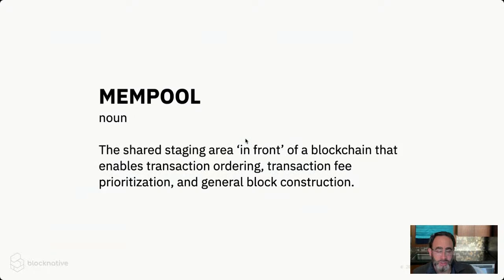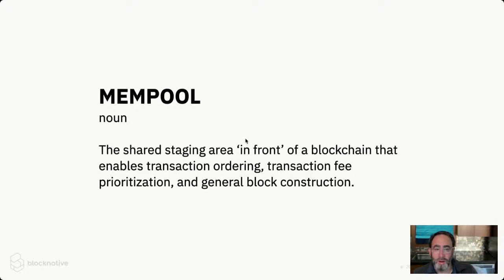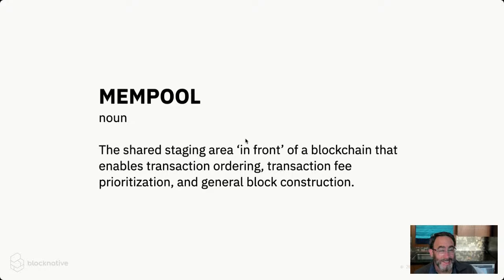So what is the mempool? It's often called the transaction pool. There's actually interesting debate — not only do different blockchains call this area different things, but even different node implementations. You might hear transaction queue, transaction pool, or mempool. We generally find mempool is the common term of art the category uses. It's the shared staging area in front of a blockchain that enables transaction ordering, transaction fee prioritization, and general block construction. It's the place where candidate transactions go in order to be considered for inclusion on-chain. And because this is the pre-consensus layer, the rules of the road are entirely different — and in fact the rules themselves can start to change depending on general network conditions.